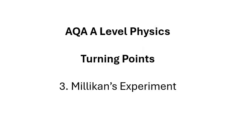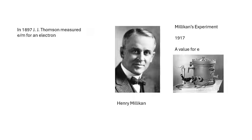AQA A-level Physics turning points. This video is about Millikan's experiment. If anybody can, Millie can, that's what I say. In 1897, J.J. Thompson measured e over m, and we talked about that in the last video. In 1917, he actually spent years working on this, but Millikan's experiment in 1917 got a value for little e. This American guy Henry Millikan.